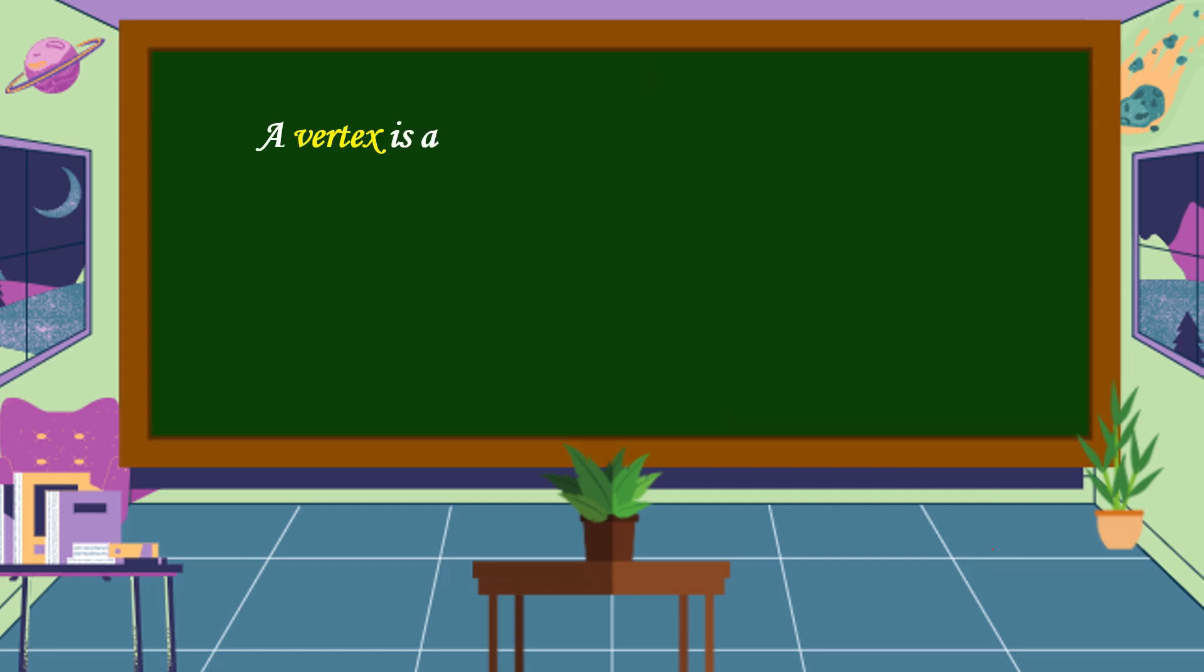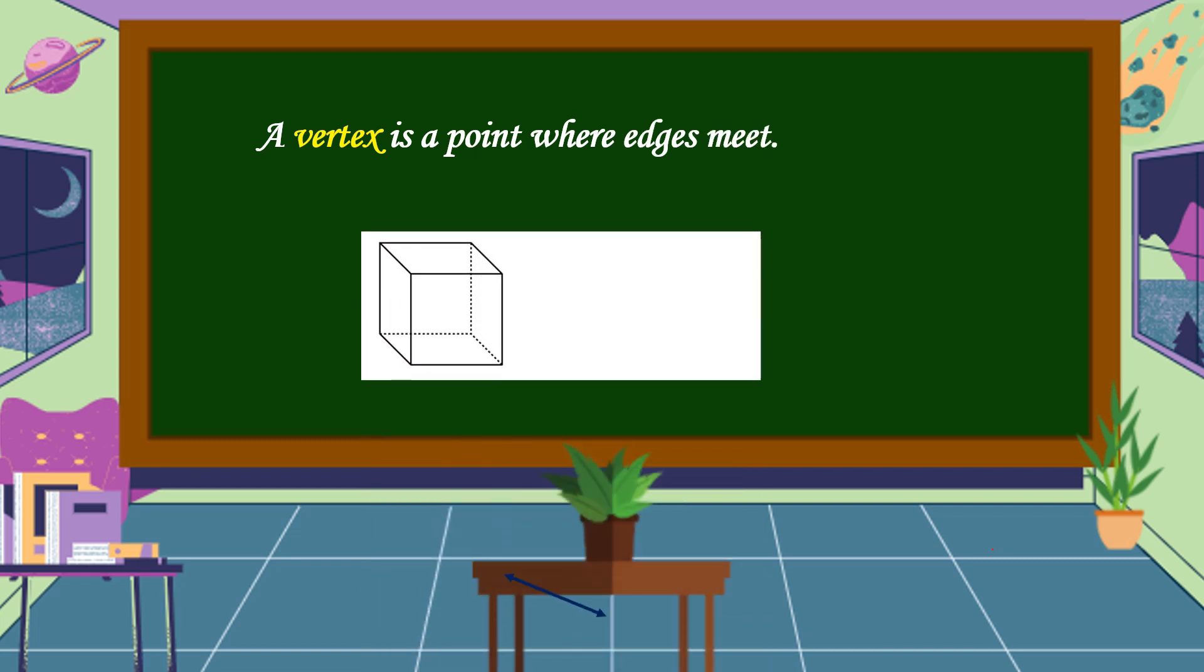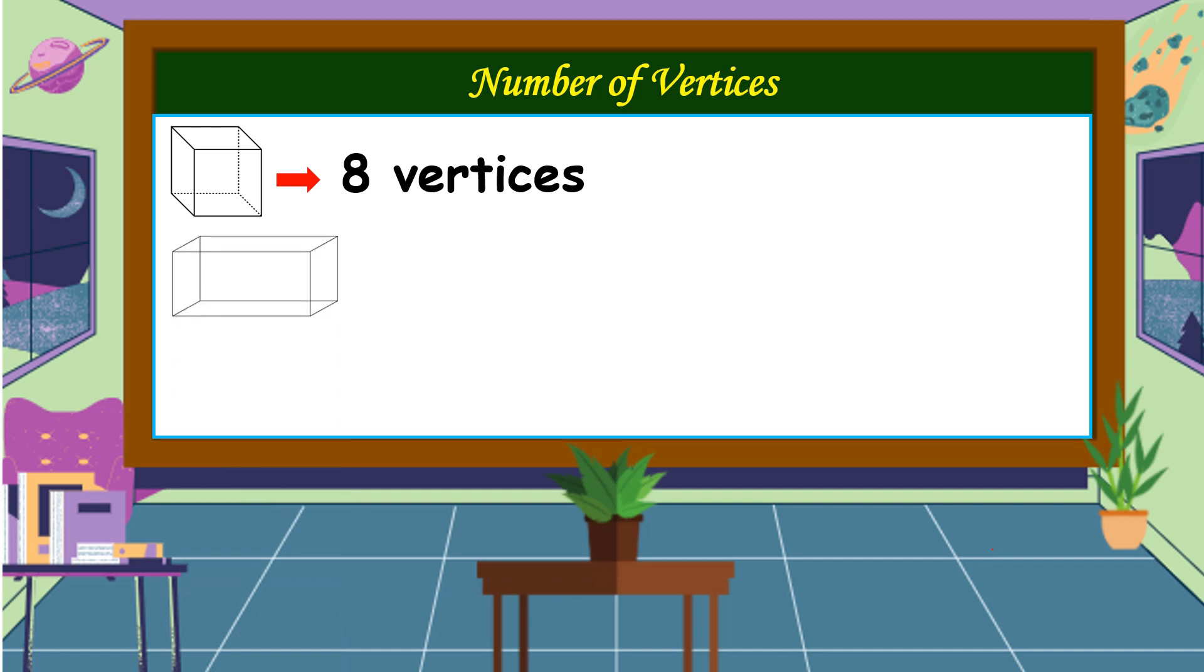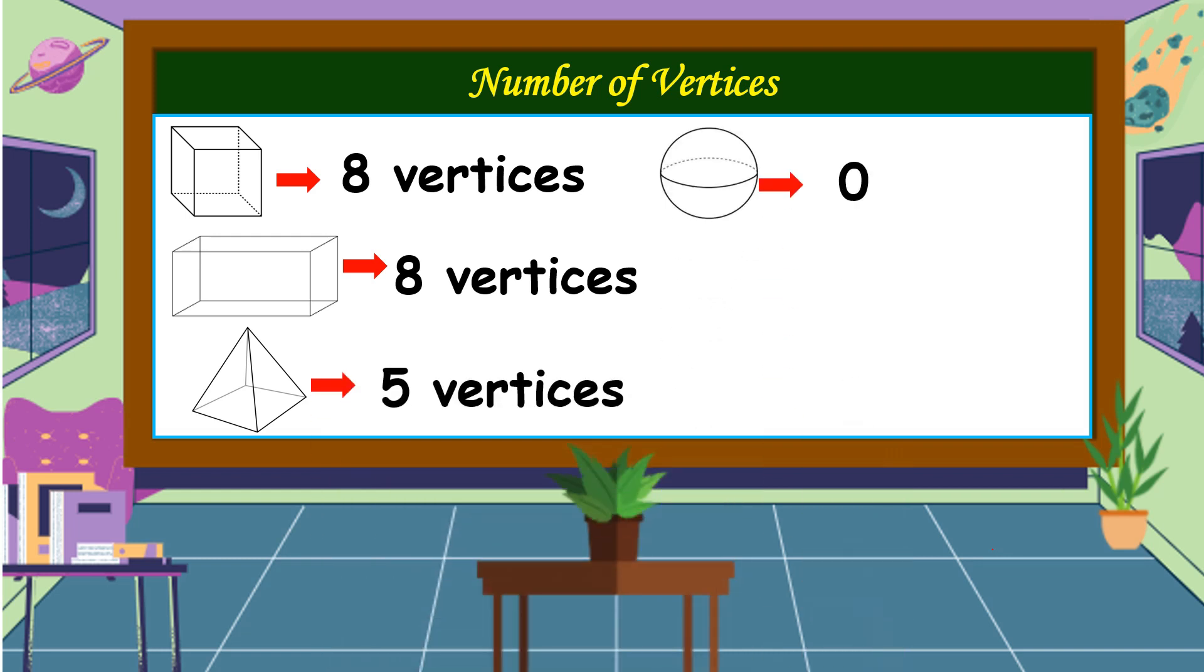A vertex is a point where edges meet. This is the vertex. Let's count the number of vertices of each solid figures. A cube has eight vertices. A rectangular prism has eight vertices, also. A pyramid has five vertices. A sphere is zero. A cylinder is zero. And a cone has one vertex.